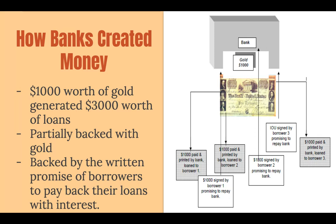The Bank of England system was partially backed with gold — typically $1,000 worth of gold in the bank would generate about $3,000 worth of loans. The Bank of England tried to stay close to this ratio because of the risk that if lenders all wanted to cash in their funds for gold at the same time, the bank would collapse and not be able to support that system.